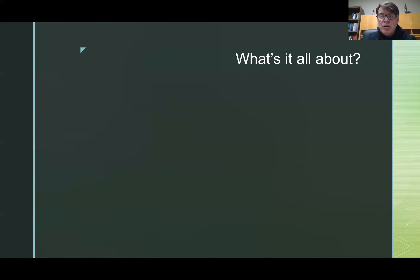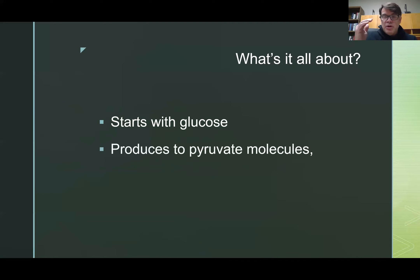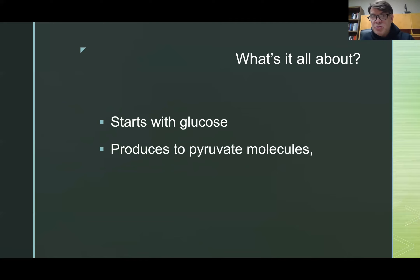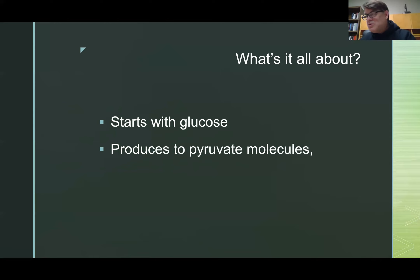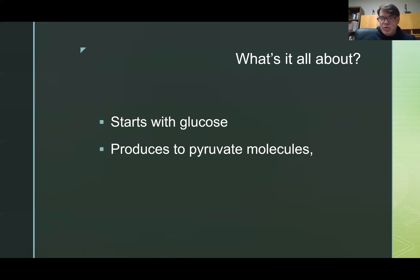So what's glycolysis all about? It starts with glucose — that makes sense because glycolysis is the process of breaking down glucose. It ends with pyruvate molecules. If I have time, I'll try to make a video on the citric cycle. This video starts the process and then we hand it off to the citric cycle.